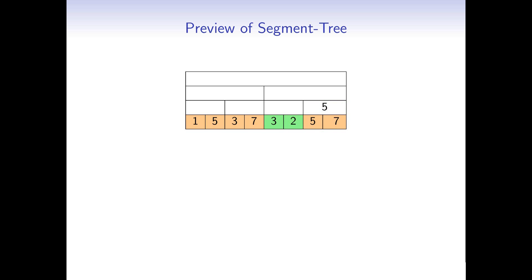Continuing to fill the tree: the minimum of 3 and 2 is 2, so that parent gets 2. The minimum of 3 and 7 is 3. The minimum of 1 and 5 is 1. The minimum of 2 and 5 is 2. The minimum of 1 and 3 is 1. And the minimum of 1 and 2 is 1. Now every node of the tree has a value assigned.